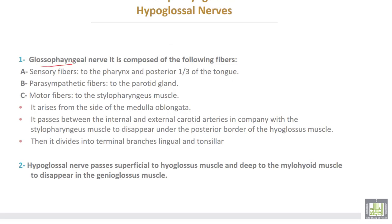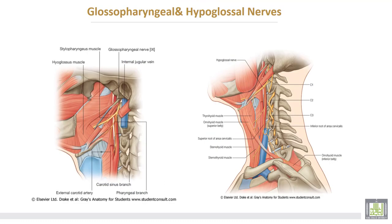The glossopharyngeal nerve is composed of sensory fibers to the pharynx and posterior third of the tongue, parasympathetic fibers to the parotid gland, and motor fibers to the stylopharyngeus muscle. It arises from the side of the medulla oblongata, passes between the internal and external carotid arteries, and accompanies the stylopharyngeus muscle to disappear under the posterior border of the hyoglossus muscle. It then divides into lingual branches and tonsillar branches. The hypoglossal nerve passes superficial to the hyoglossus muscle and to the mylohyoid muscle to disappear in the genioglossus muscle.